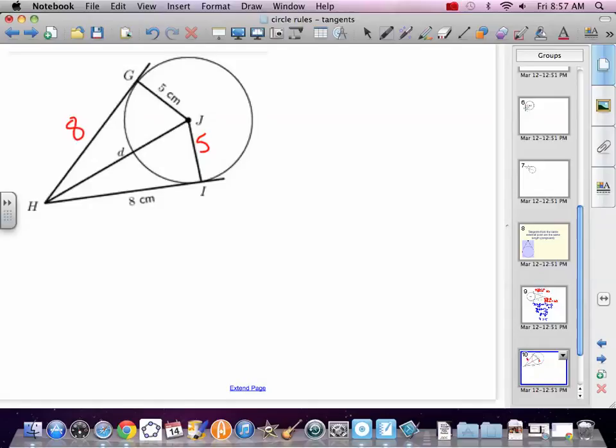Now we need to figure out how long HJ is. You realize those two triangles are the same triangle? Just one's like a reflection, and HJ is the line of reflection. Do you realize those two triangles are right triangles? One of our rules of tangents says tangents are perpendicular to a radius. Well, if they're right triangles, that means we can do Pythagorean theorem. Just have to identify which is the hypotenuse and which are the legs.